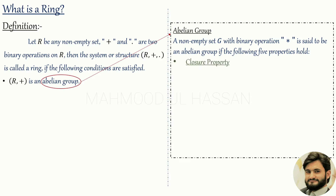The first property is closure property: for any two elements taken from G, applying the operation gives a result still in G. That is, for all a, b belonging to G, a steric b must belong to G. The second condition is the associative law: for any a, b, c belonging to G, a steric (b steric c) equals (a steric b) steric c. The associative property must also hold.